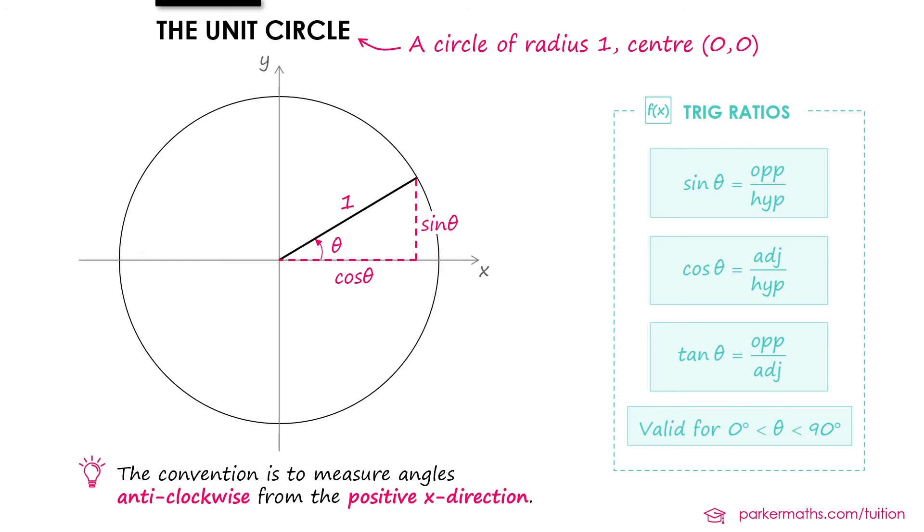And this allows us to extend our definition of cos θ and sin θ. Because if we take the point on the circle at the end of the radius, the coordinates of that point are (cos θ, sin θ)—because cos θ is the distance we went in the X direction and sin θ is the distance we went in the Y direction.